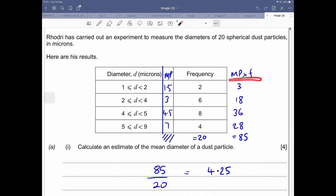You can then see another column has been forced onto the end here called midpoint times frequency. So they've done 1.5 times by 2 to get 3, 3 times by 6 to get 18, and so on to get the other answers.